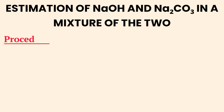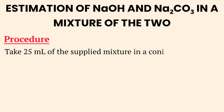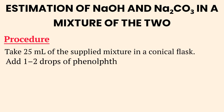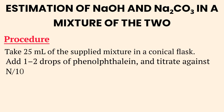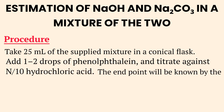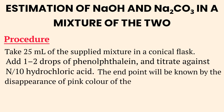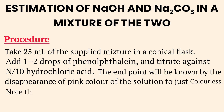Procedure: Take 25 milliliters of the supplied mixture in a conical flask. Add one to two drops of phenolphthalein and titrate against standard hydrochloric acid. The endpoint will be known by the disappearance of pink color of the solution to just colorless. Note the endpoint.